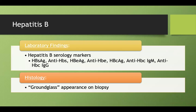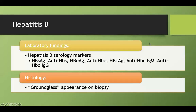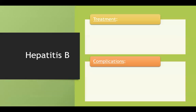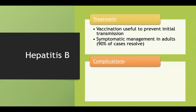For hepatitis B histology, you get a ground glass appearance on biopsy — it looks like frosted glass throughout the hepatocytes, and that's indicative of hep B. Treatment: ensure correct vaccinations to limit hep B. In adults, treatment is often just symptomatic management since it rarely progresses to chronic disease; antivirals like tenofovir and entecavir are also treatment options.